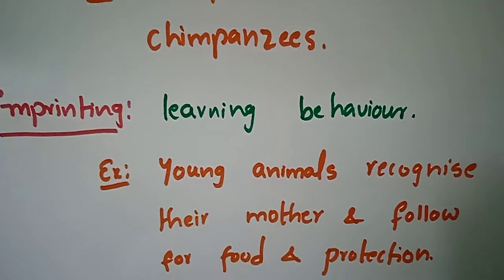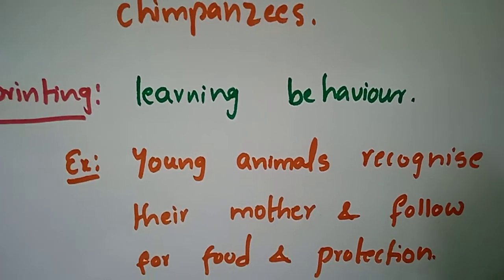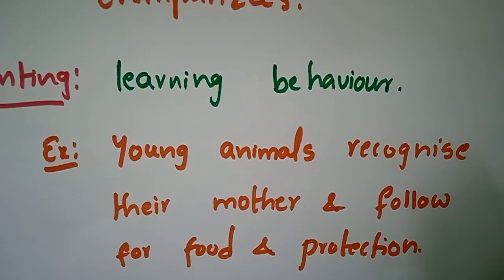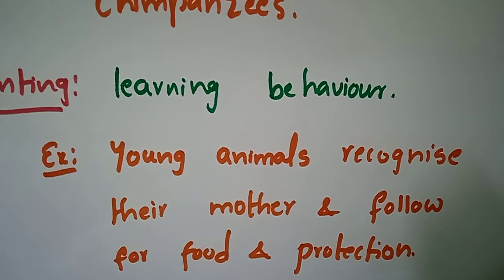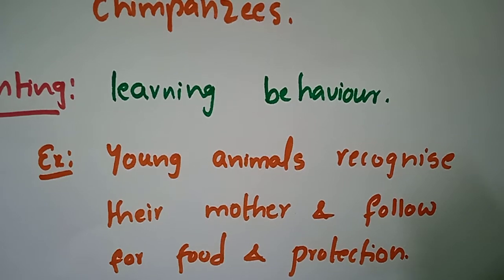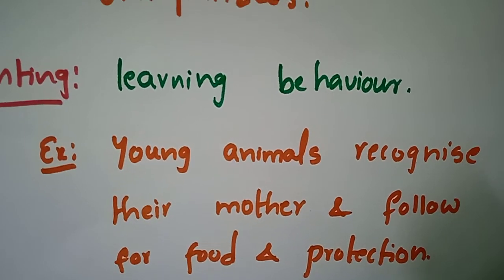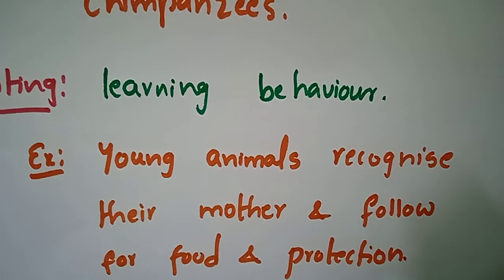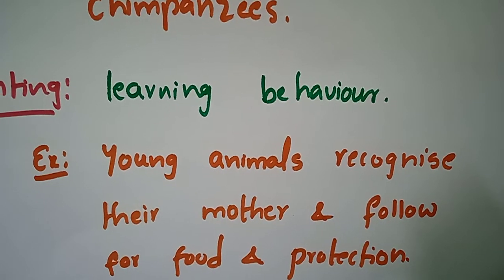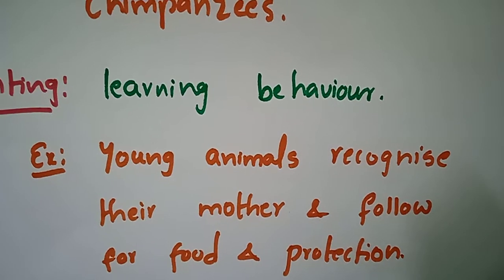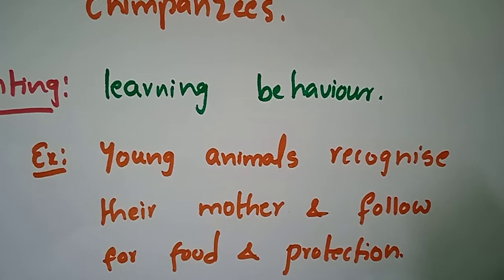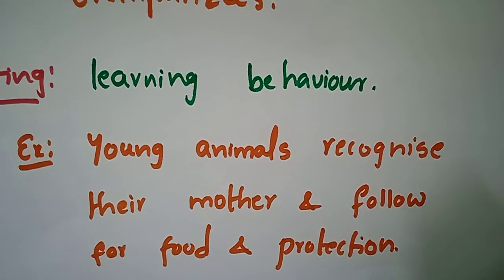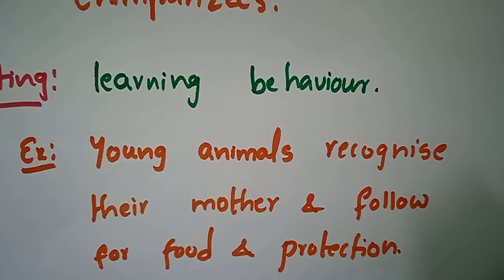Imprinting. This is a learning behavior. That means young animals recognize their mother and follow for food and protection. By seeing their parents, the animals can move and search for food. Everything they learn from their mothers — that is imprinting.